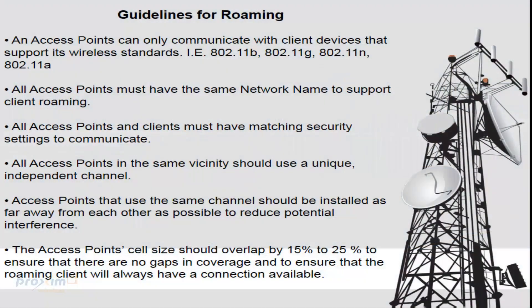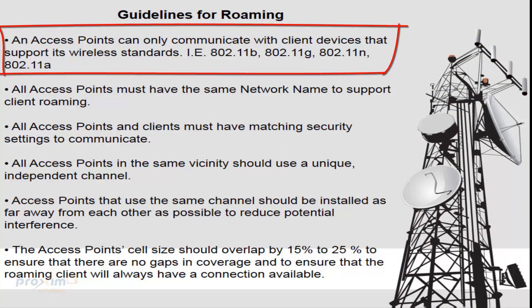We're going to go over some guidelines for roaming. An access point can only communicate with client devices that support the same wireless standard, i.e. 802.11b, g, 802.11n, and 802.11a. N could be either a, which is 5GHz, or g, which is 2.4. You cannot have an 802.11b communicate with an 802.11a, or an 802.11a 5GHz communicate with a 2.4GHz. It's just not designed that way.